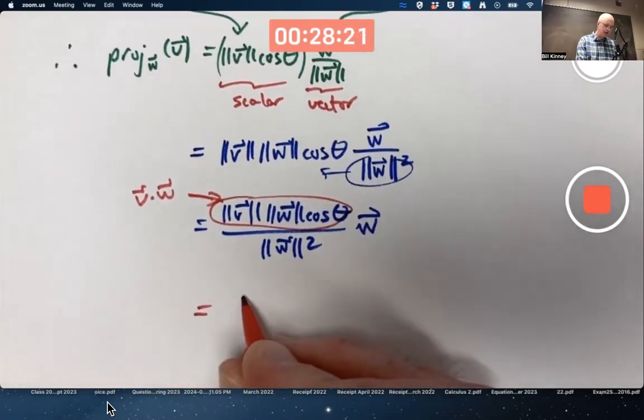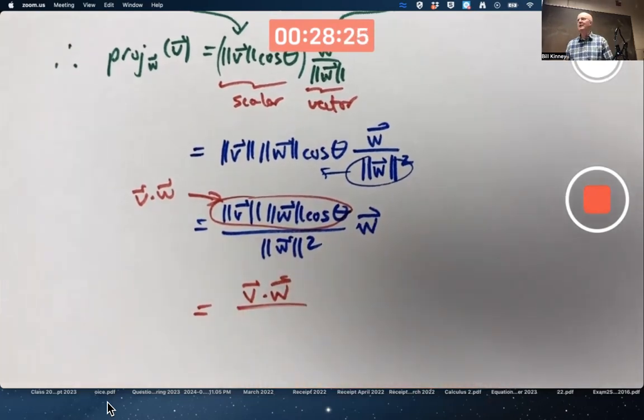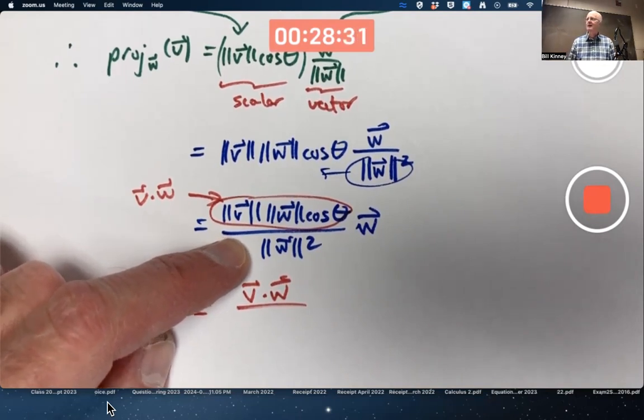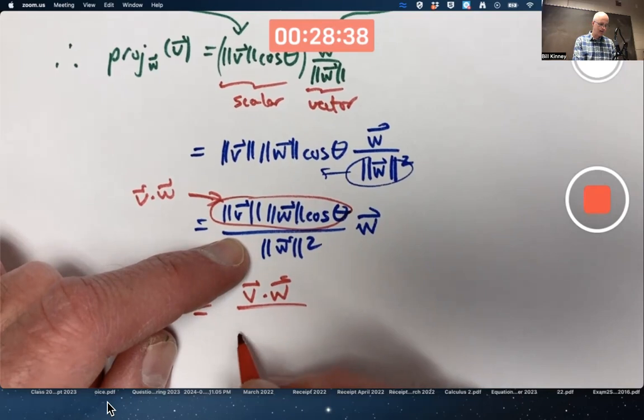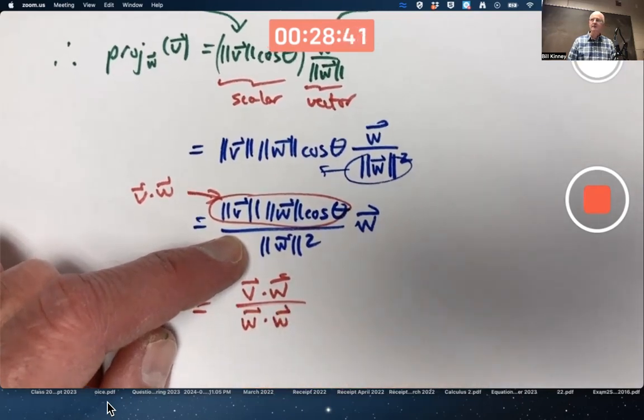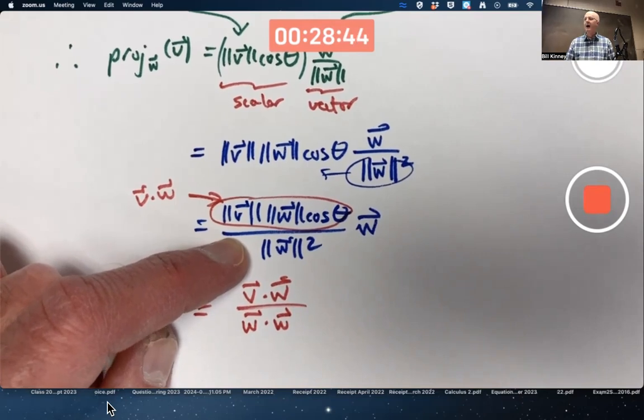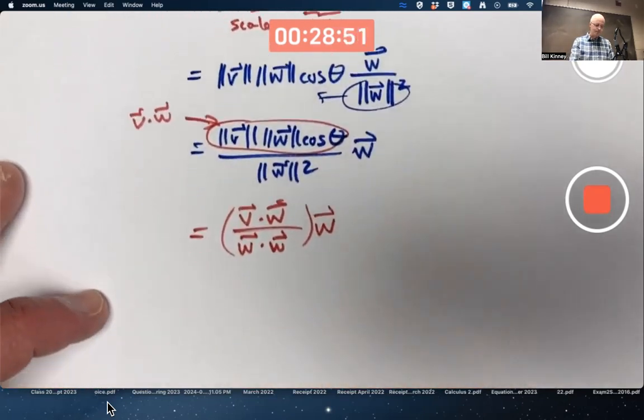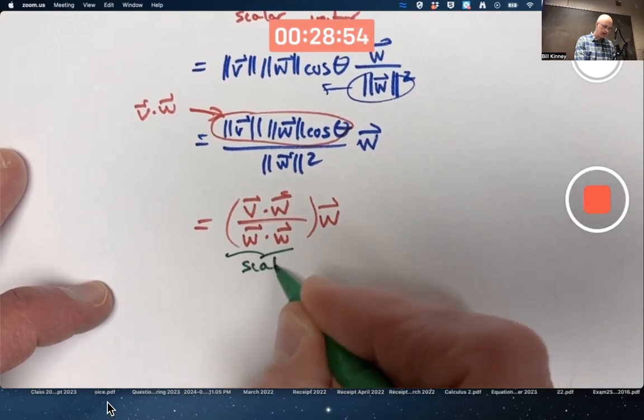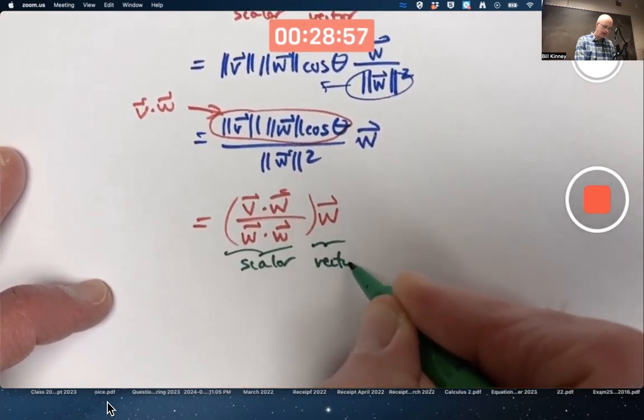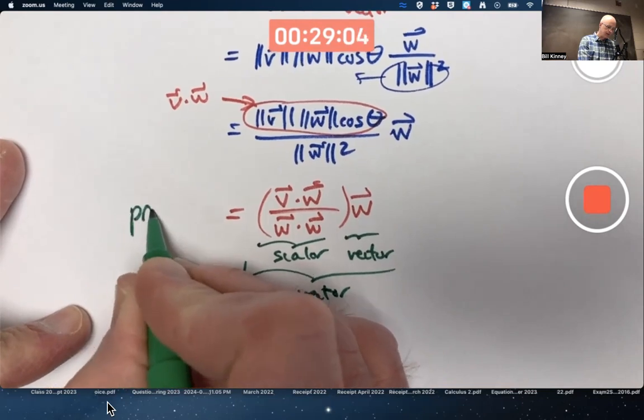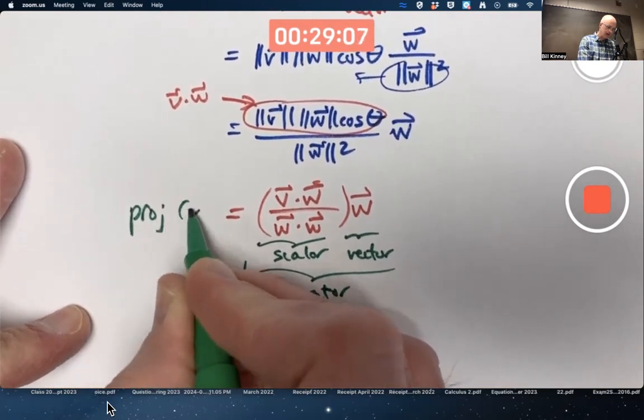So the final simplification includes a V dot W in the numerator. It also includes a dot product in the denominator. Magnitude of W squared is W dotted with itself, right? Because the magnitude of W is the square root of W dotted with itself. I'm squaring it, so the square root goes away. This is a scalar, this is a vector. The whole product is a vector. This is the formula people use for the projection vector of V along W.